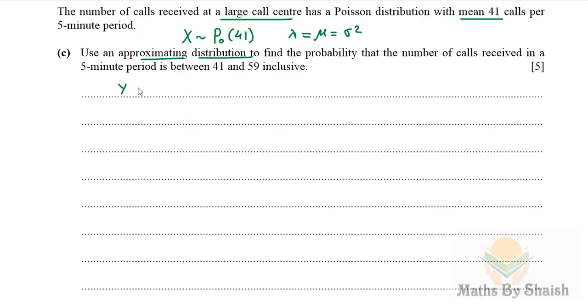Let's take it as Y. So Y would be normal distribution with mean and variance as sigma squared. Since here mu is going to be 41 and sigma squared also is going to be 41, this becomes Y is normally distributed with parameters 41 and 41.